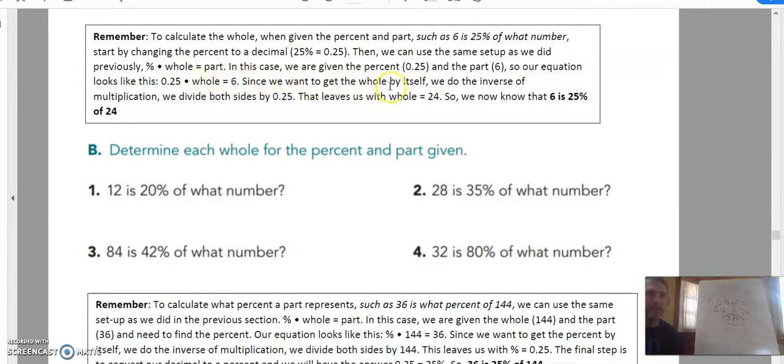So since we want to get the whole by itself, we do the inverse of multiplication, which is division. So we're going to divide 24 by 0.25. Oh I'm sorry, not 24. We're going to divide 6 by 0.25, and that would give us 24.